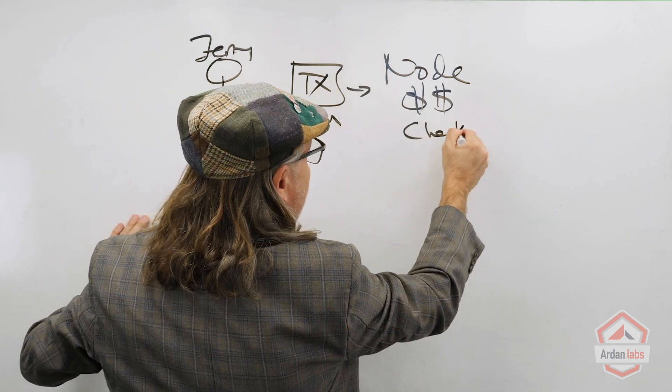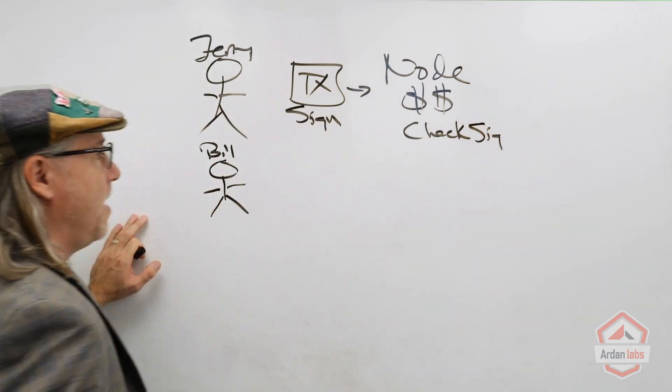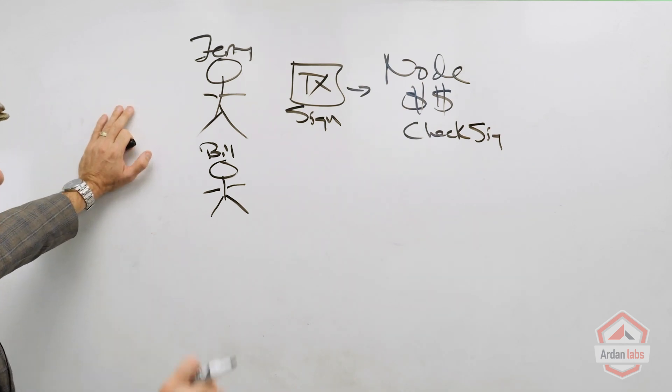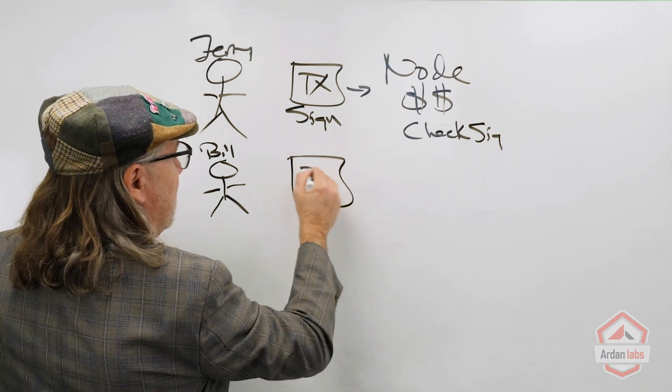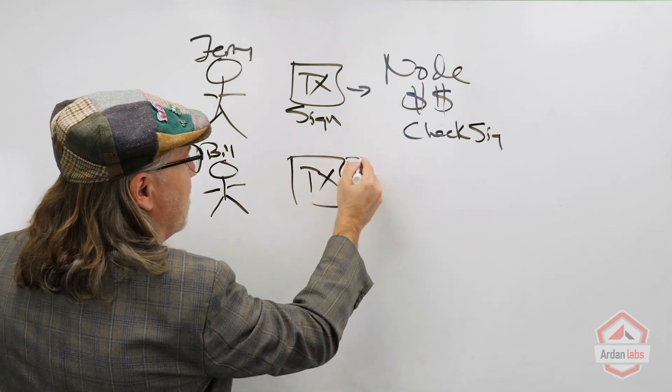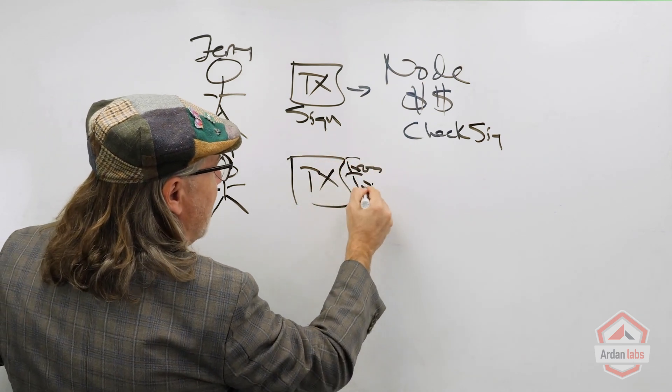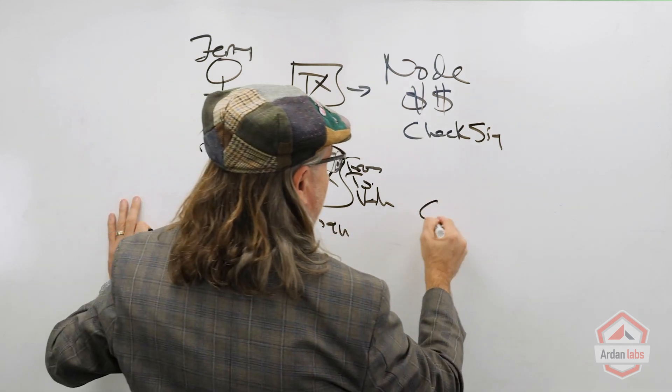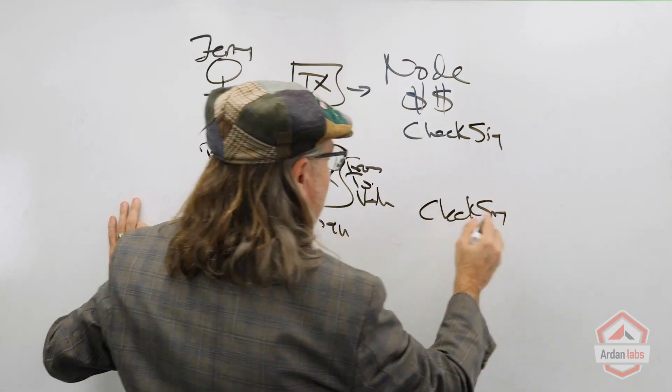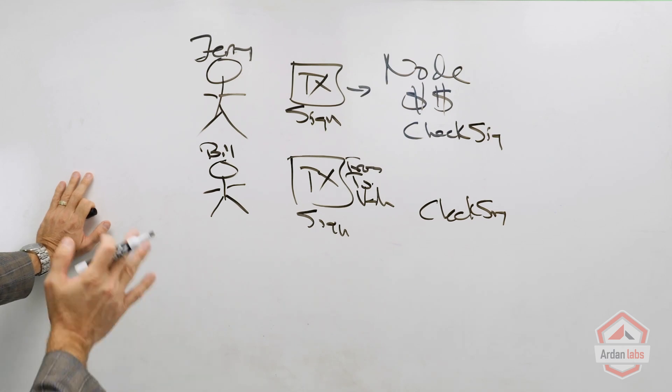They can sign the transaction, and then the node gets the transaction and needs a way of checking the signature and saying, yep, for sure this had to come from Jerry because Jerry is the only one that could have signed that data with this signature. Same thing here—Bill gets that transaction, the from, the to, the value that you want to send, and then we sign it and check that signature.